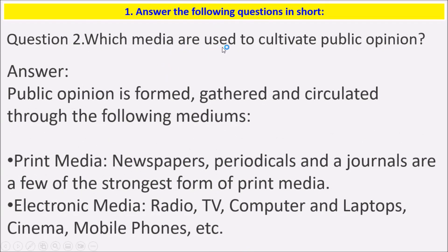Which media are used to cultivate public opinion? Public opinion is formed, gathered and circulated through the following mediums. Print media — newspapers, press articles, or journals are among the strongest forms of print media. Electronic media — radio, TV, computers, laptops, cinemas, and mobile phones are examples of electronic media.